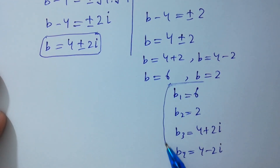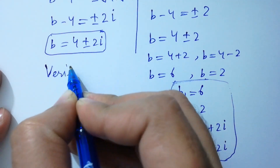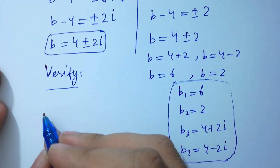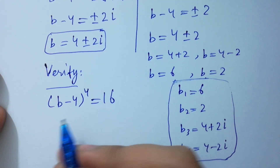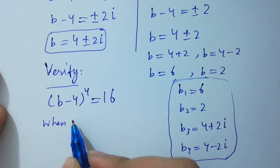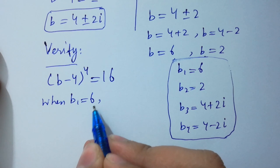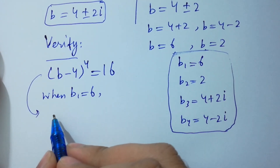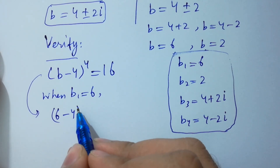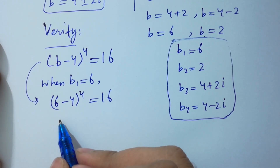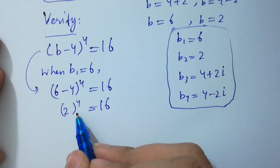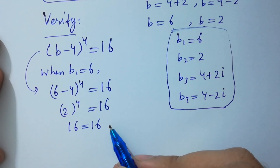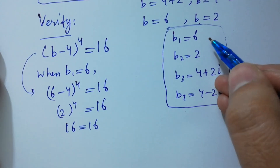So it has four solutions. Now I am going to verify using (b-4)⁴ = 16. When b = 6: substituting, we get (6-4)⁴ = 2⁴ = 16 = 16. This satisfies the equation, so b = 6 is correct.